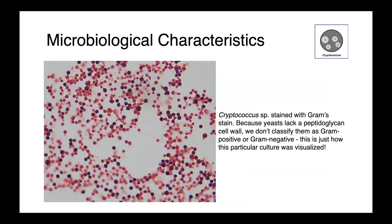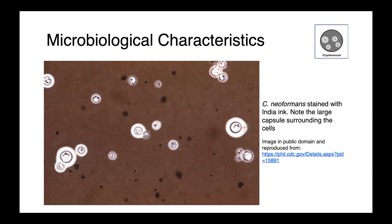Here we have Cryptococcus species stained with Gram stain. Yeasts lack a peptidoglycan-based cell wall, so we don't describe them as Gram positive or Gram negative — that's just how this particular slide was visualized. In this picture, we have a much more characteristic view of Cryptococcus stained with India ink, and what you can appreciate is this large capsule surrounding the cell — the yeast organism in the center with this large mucopolysaccharide capsule all around it that excludes the dye.